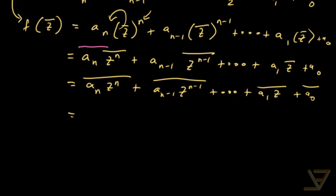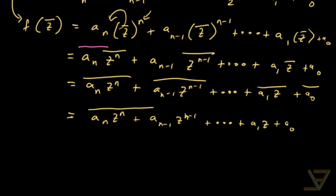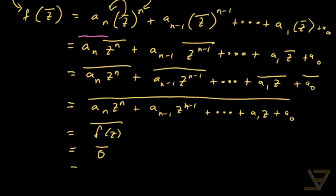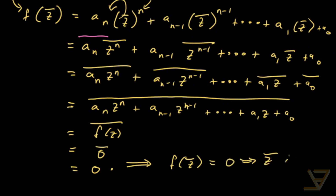So we get a_n z to the n plus a_{n-1} z to the n minus 1, plus all the way through to a_1 z plus a_0, with a bar over the whole thing. But this is just f of z bar, which equals 0 bar, and that is just equal to 0. So that proves that f of z bar equals 0, meaning z bar is a root of f. That proves the theorem.